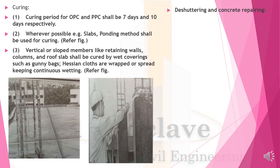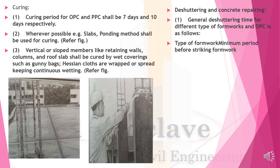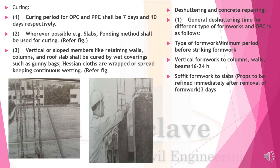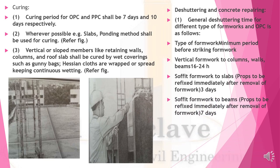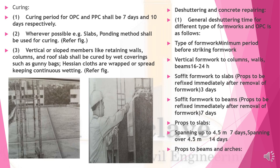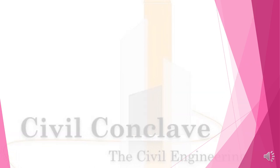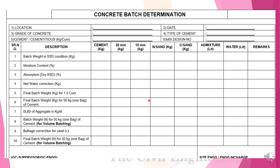De-shuttering and concreting repairing: For OPC, de-shuttering periods are as follows — vertical formwork for columns: 16 to 24 hours; soffit formwork for slabs (props to be refixed immediately): 3 days; soffit formwork for beams (props to be refixed immediately): 7 days; props to slabs spanning up to 4.5m: 7 days; above 4.5m: 14 days; props to beams and arches spanning up to 6m: 14 days; spanning over 6m: 21 days.